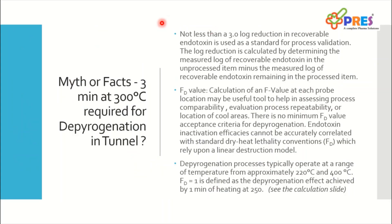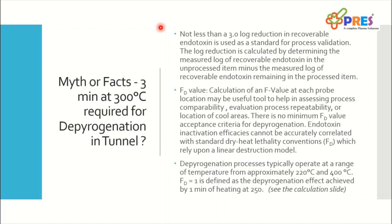Friends, not less than a 3-log reduction in recoverable endotoxin is used as a standard for process validation of a depyrogenation tunnel. The log reduction is calculated by determining the measured log of recoverable endotoxin in the unprocessed item minus the measured log of recoverable endotoxin remaining in the processed item, which is exposed to heat during the study. That's how you calculate how much log reduction you have achieved during the process.